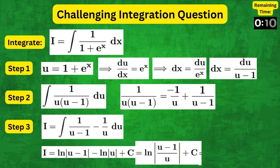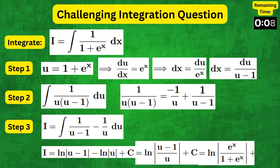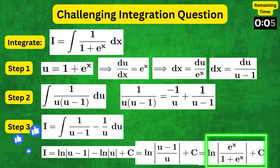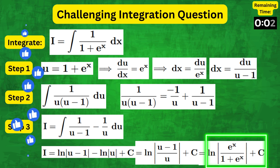Finally, replacing u with 1 plus e to the x, we get natural log of e to the x over 1 plus e to the x, plus c as the answer.